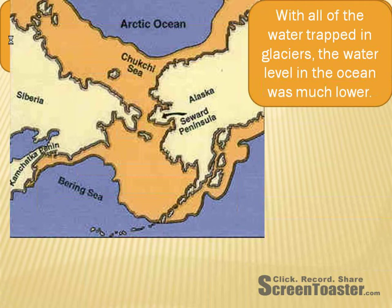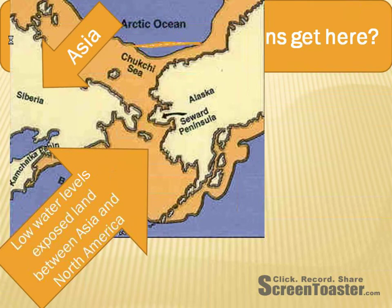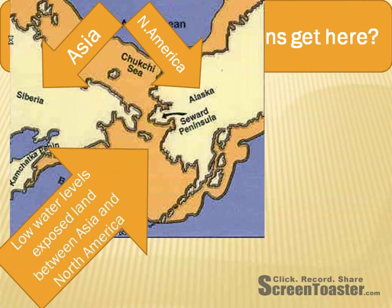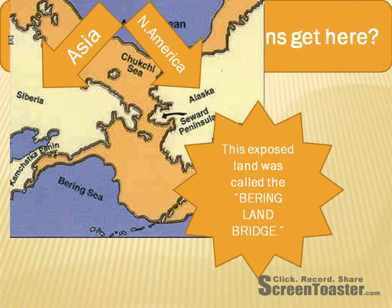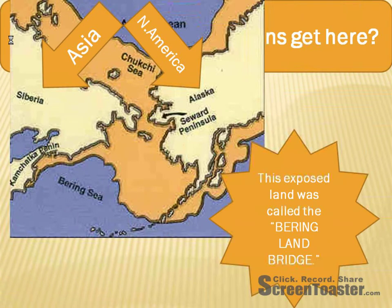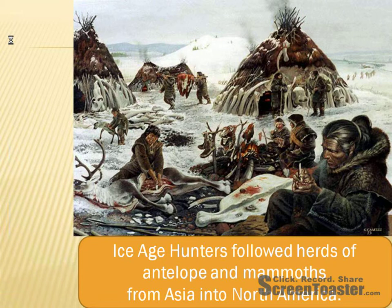With all this water that was trapped in the form of glaciers, the water level — because all that water has to come from somewhere for that ice — came out of the ocean. It caused the water level in the world to be much, much lower, and it actually exposed part of the seafloor between North America and Asia, between Alaska and what is now Russia. These low water levels exposed this land, and you could actually walk all the way across from Russia into North America through this Bering land bridge. The people that did this were Ice Age hunters who were following antelope and mammoth from Asia into North America.